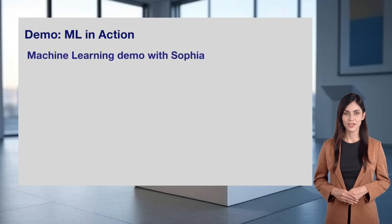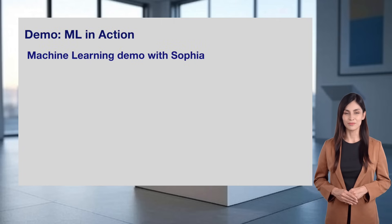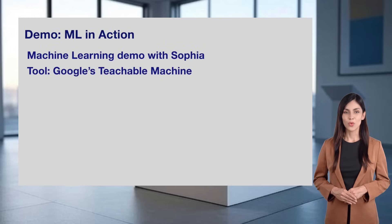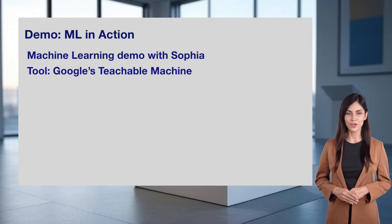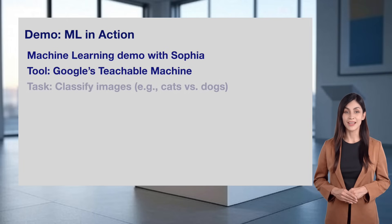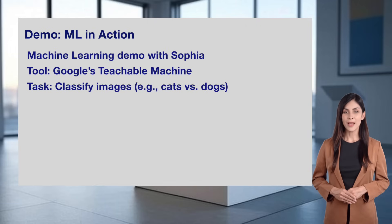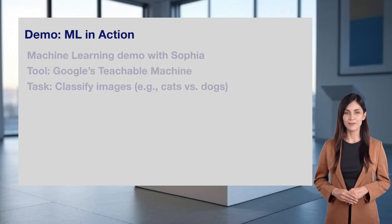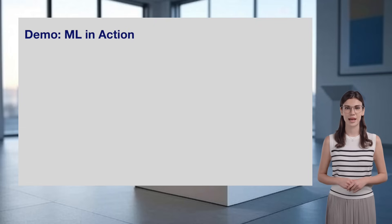To see machine learning in action, let's bring in Sophia for a quick demo. She'll use Google's Teachable Machine, a free tool to show how machine learning can classify images, like telling cats from dogs. This will give you a hands-on look at how ML works. Over to you, Sophia.